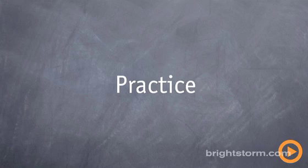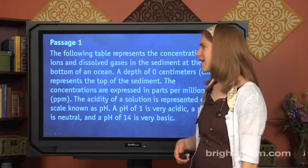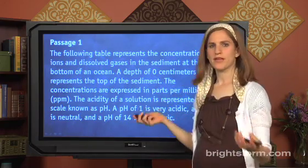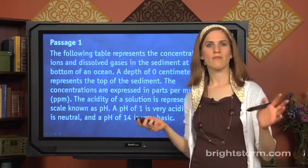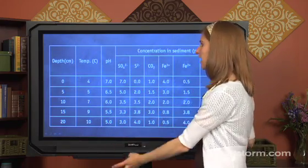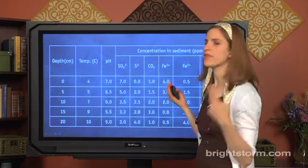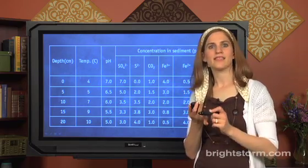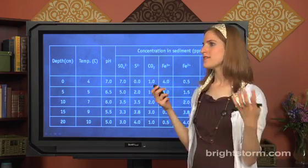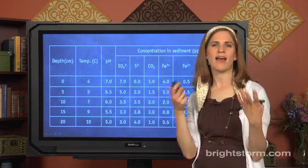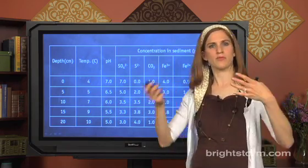Here's our data representation passage. You can see we've got our intro here — a fairly long paragraph describing what we're going to see in the table. Remember, we don't need it, so let's skip it. What we need is this table, and we're going to look for things we talked about before: the labels and the trends. There isn't another table alongside this one, so we don't need to worry about how different tables relate to each other, because we only have one.